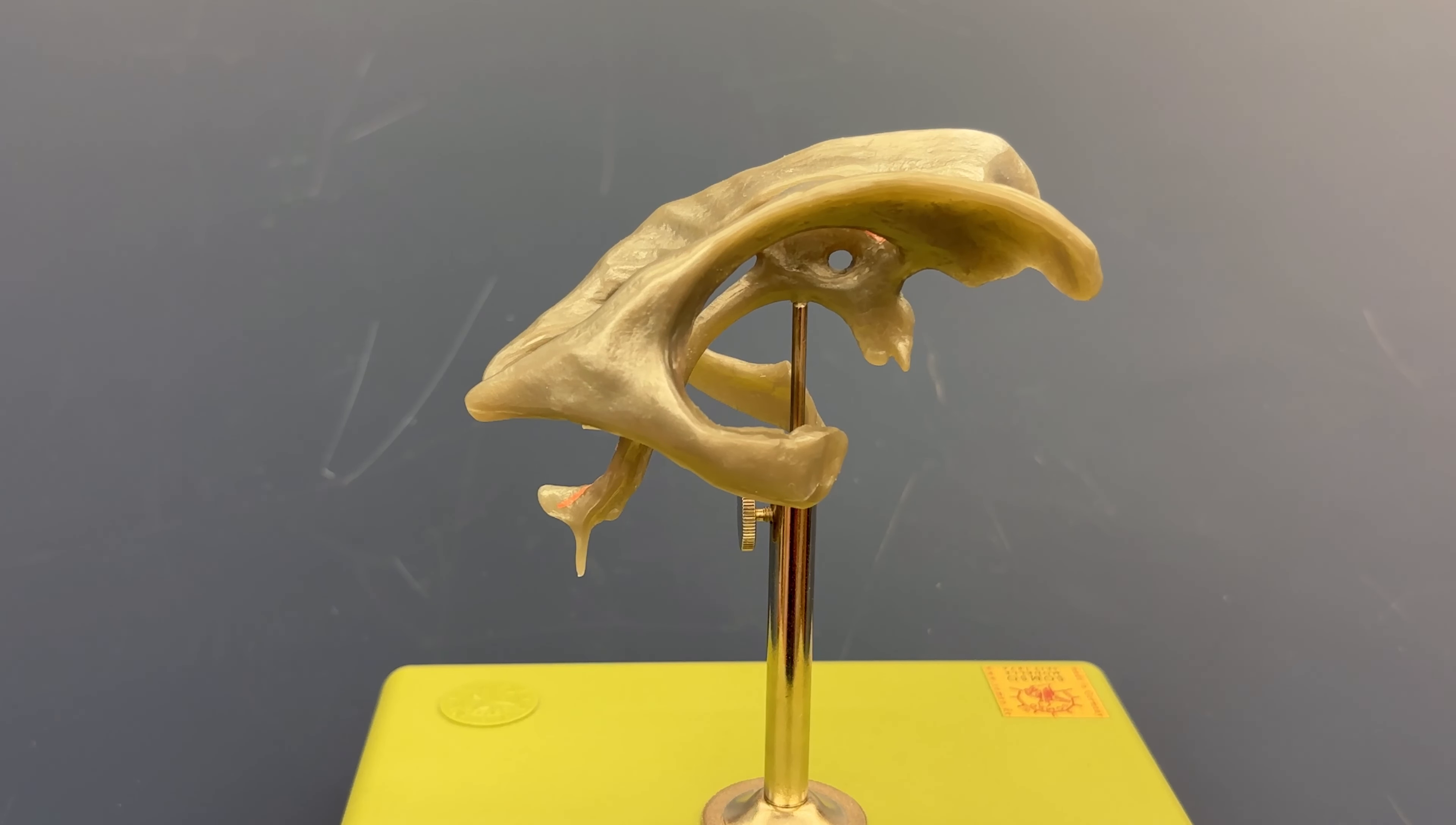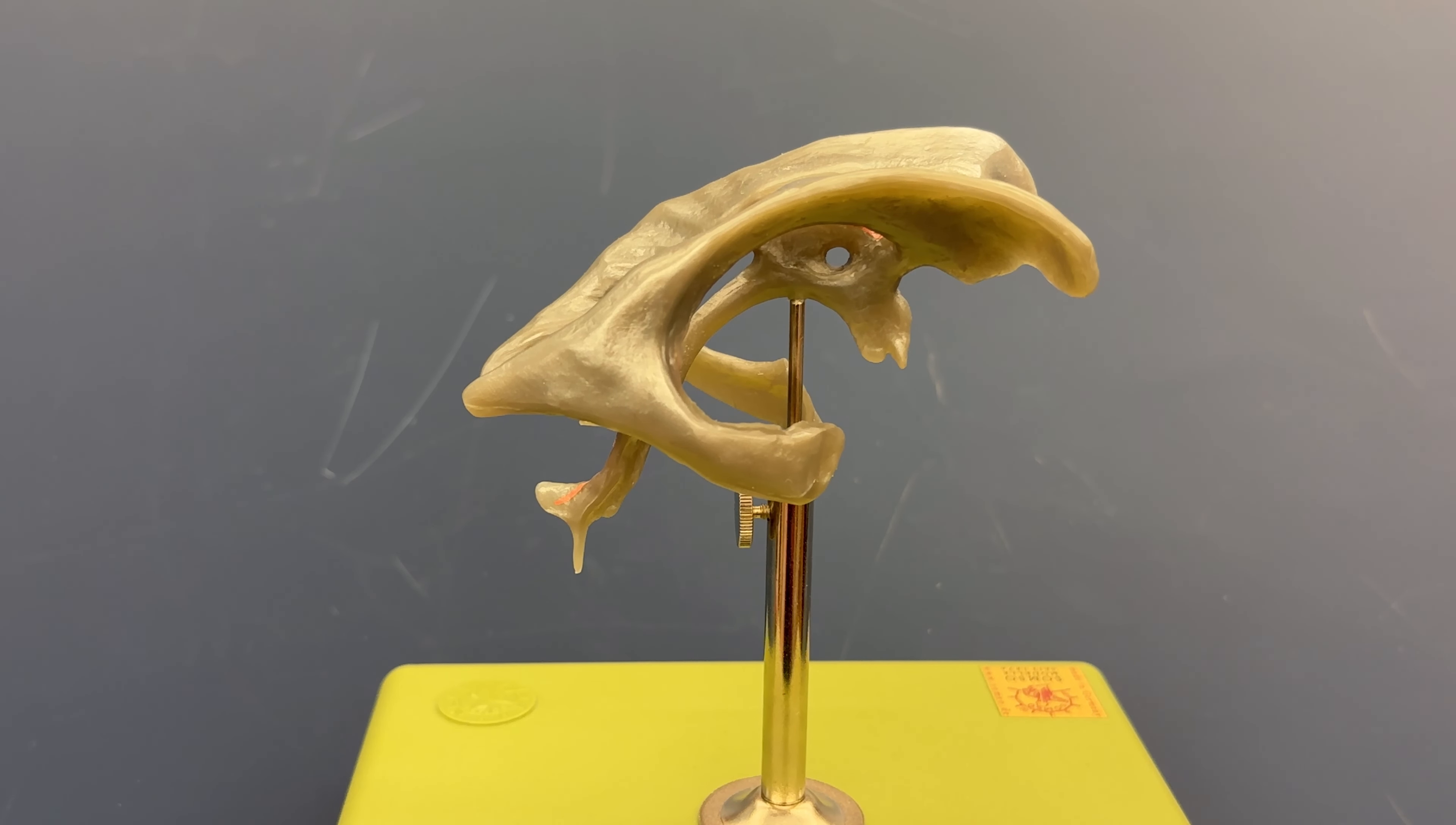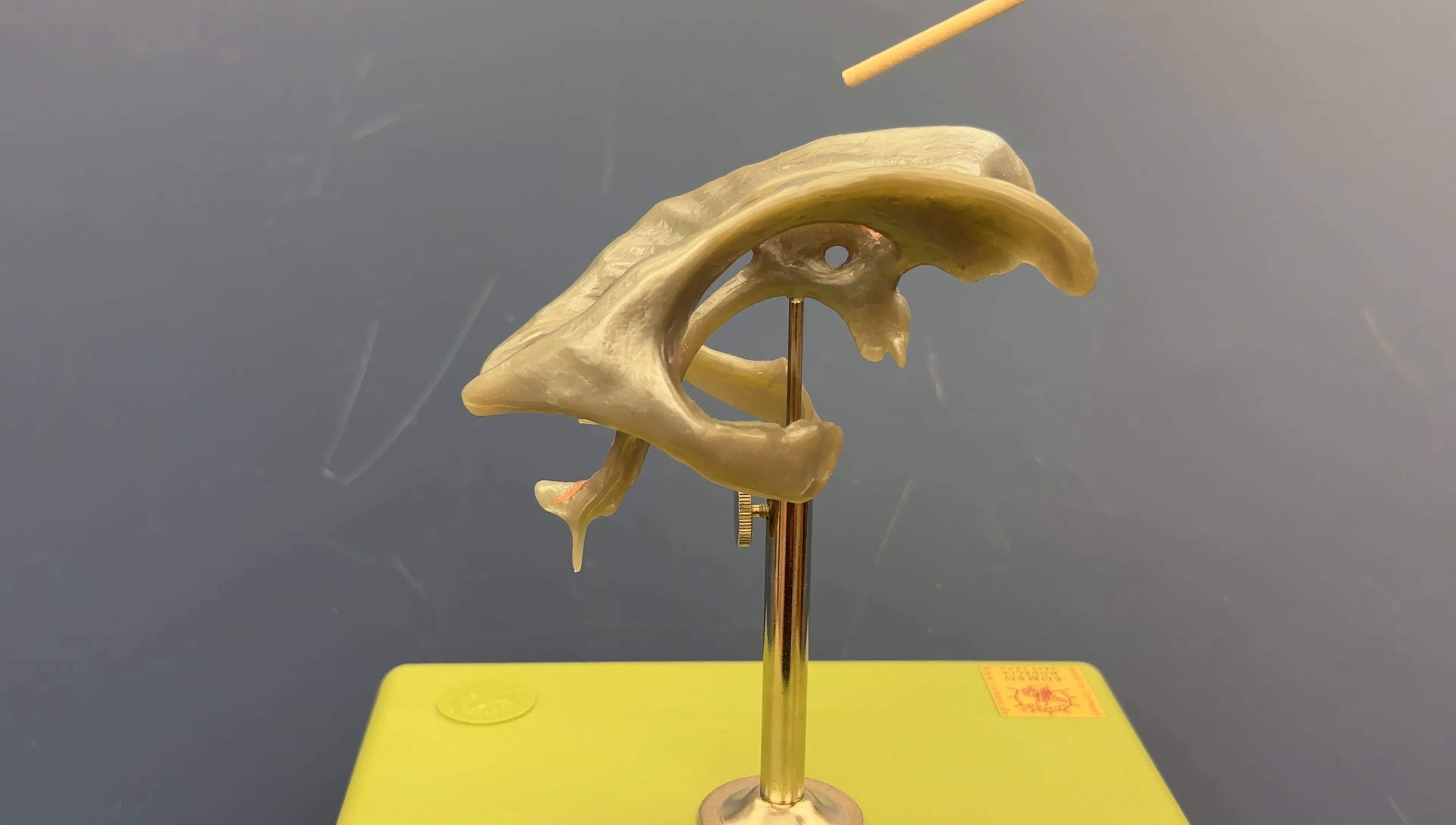All right, we're going to go through the ventricles of the brain using this ventricle cast model. So we'll start with this particular view, which is more of a lateral view, and we have the two lateral ventricles here.